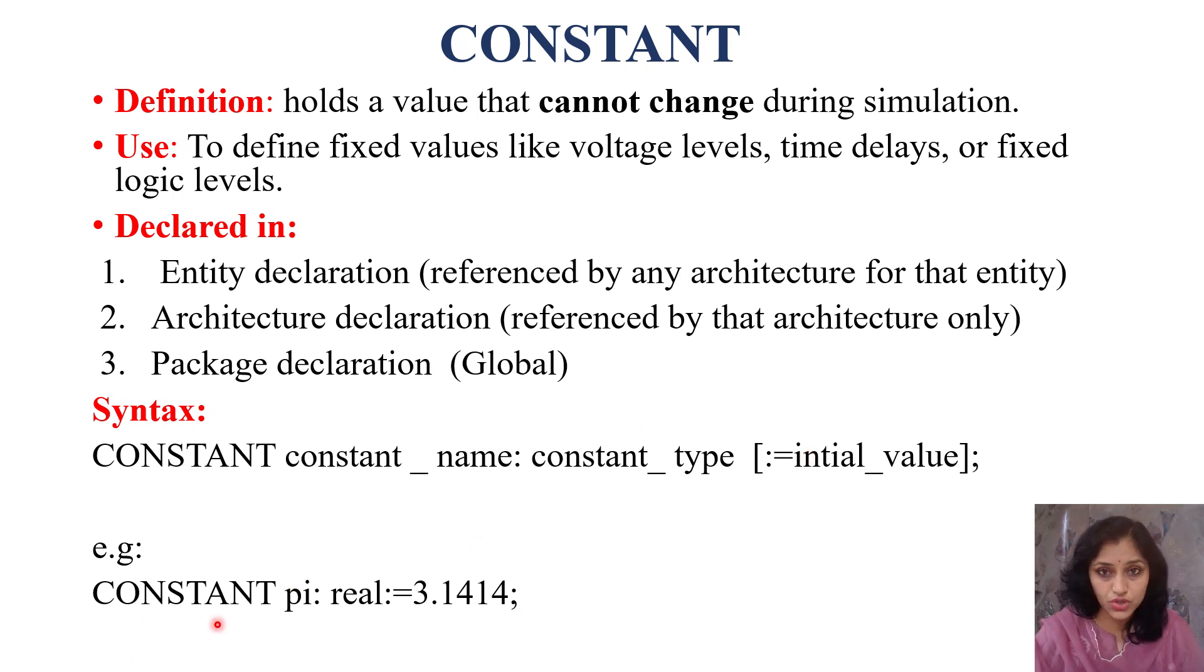Example is constant, first word. Name given is pi, its data type is real and its value is 3.1414.